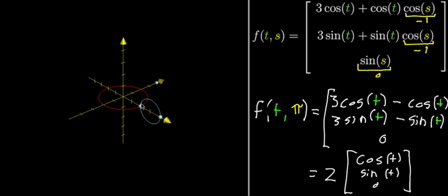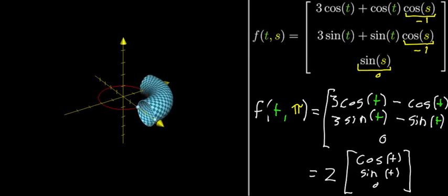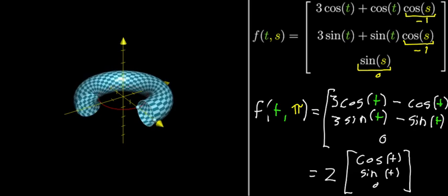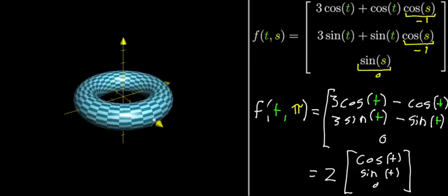And in fact, if you let both t and s run freely, a very nice way to visualize that is to imagine that this circle, which represents s running freely, sweeps throughout space as you start to let t run freely. And what you're gonna end up getting when you do that is a shape that goes like this.